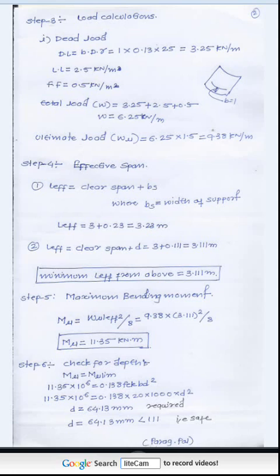Step 4: Calculate effective span. Two values are compared: the first effective span is 3.23m, and the clear span plus d = 3.111m. Taking the minimum, the effective span L_eff = 3.111m.